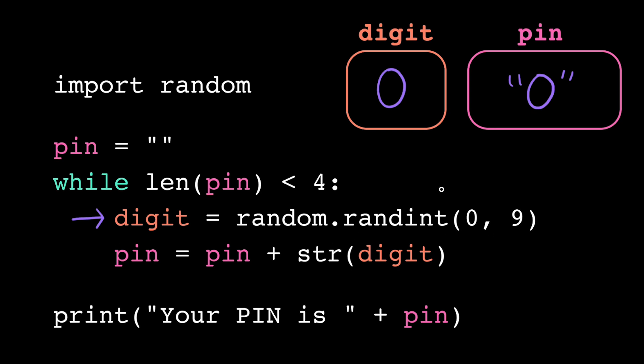We generate a new random number, let's say 5 this time, assign that to digit, and then we update our loop variable pin. Pin currently contains the value 0, and then we concatenate on the string 5 to get 0 5. We store that back in pin, and now we're at the bottom of the loop again.